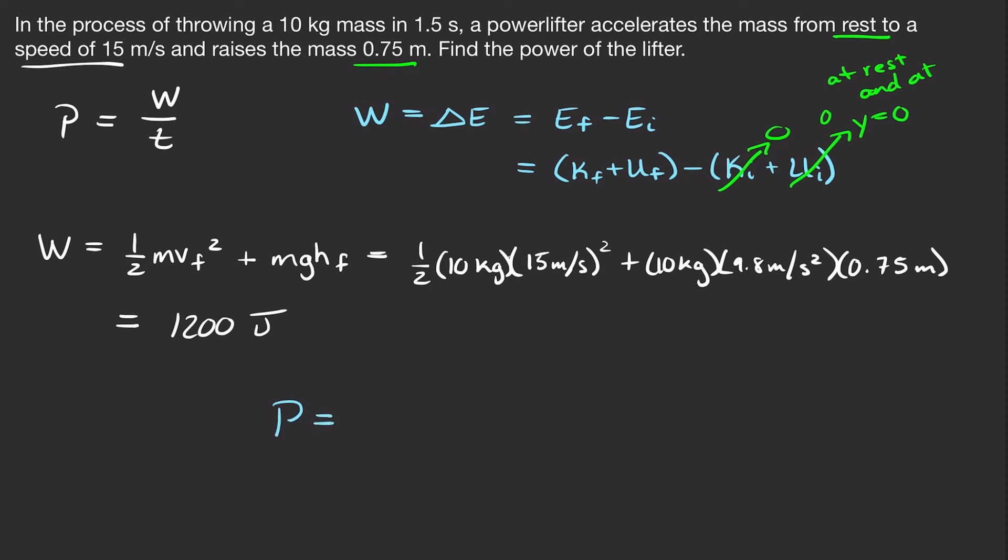Now, our power is our work over time. So, we take this 1,200 joules of work that he did over time of 1.5 seconds and we get that the power lifter had 800 watts of power.